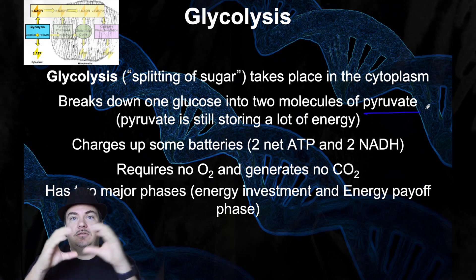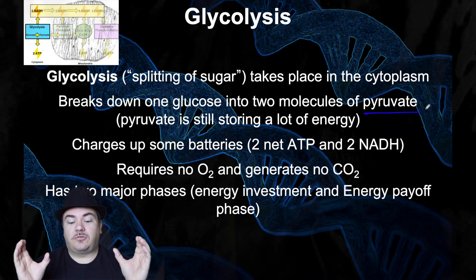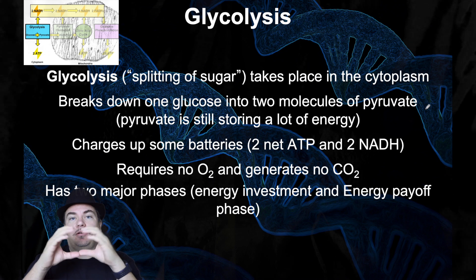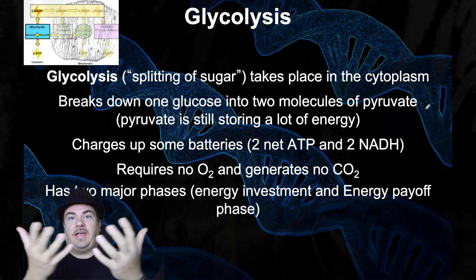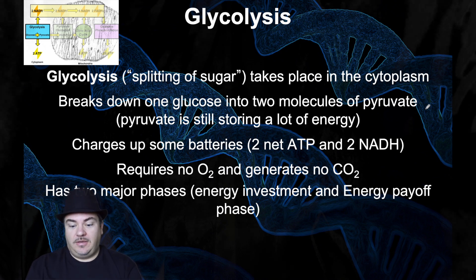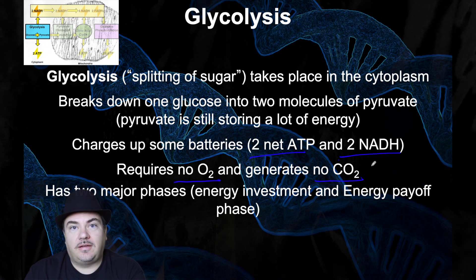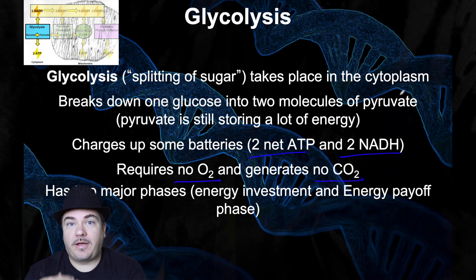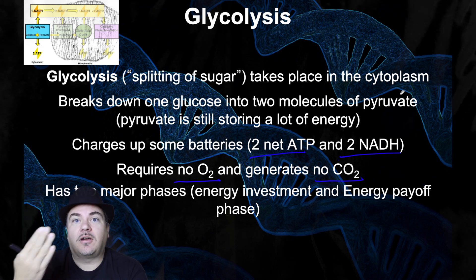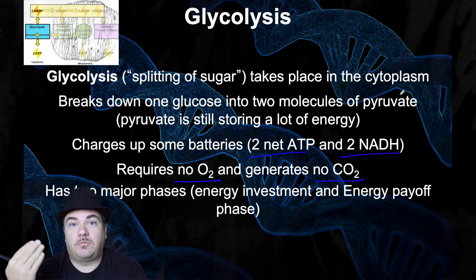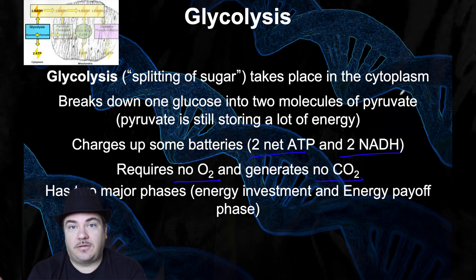Now glucose had a lot of energy, and these two pyruvate molecules are still storing a lot of energy. But since you're taking a bigger molecule and breaking it down into two smaller molecules, you're also releasing energy — the cell captures that energy to charge up two net ATP and two NADH. Glycolysis does not require oxygen and it does not release carbon dioxide. When you're breathing, you're trying to take in oxygen and release carbon dioxide — and today you're going to learn why. But that doesn't have to do with glycolysis.